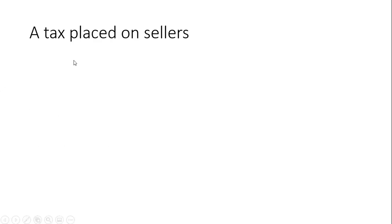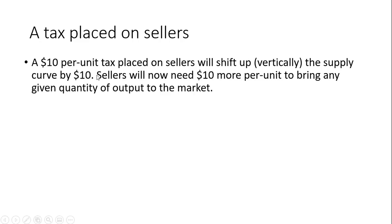We're going to first look at a tax placed on sellers. A $10 per unit tax placed on sellers will shift up vertically the supply curve by exactly $10. Sellers will now need $10 more per unit to bring any given quantity of output to the market.